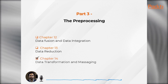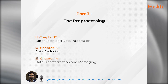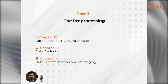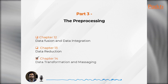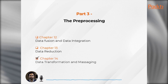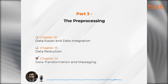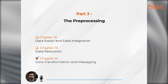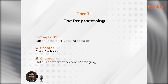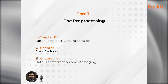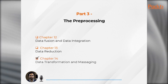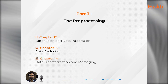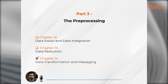Lastly, Chapter 14 covers various data transformation and massaging methods such as feature extraction, smoothing, aggregation, binning, log transformation, and discretization. These methods enable readers to take their analytics effectiveness to the next level by optimizing data readiness for analytics.